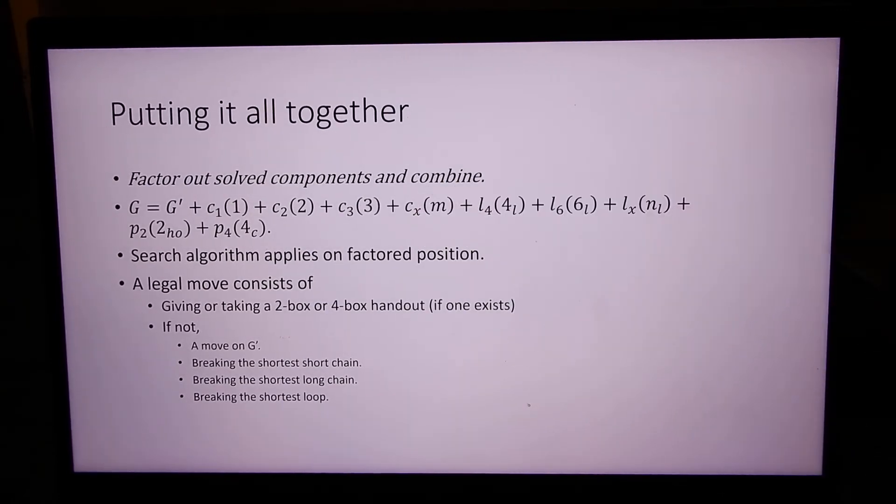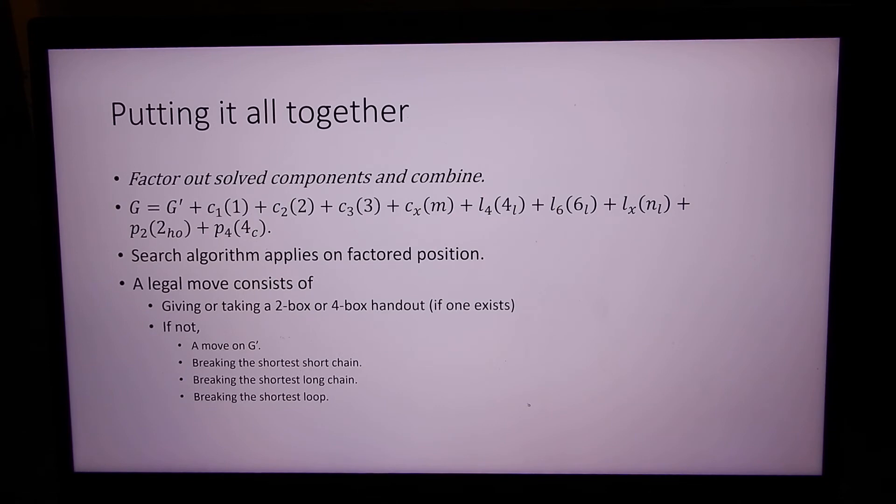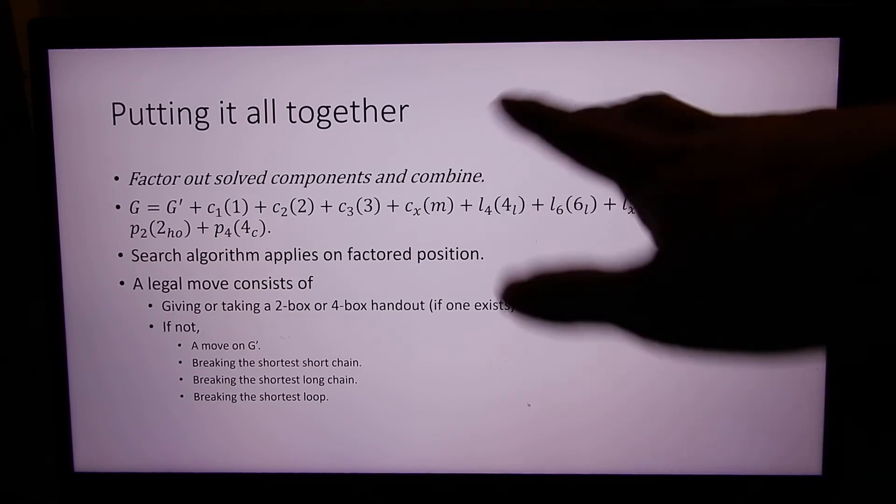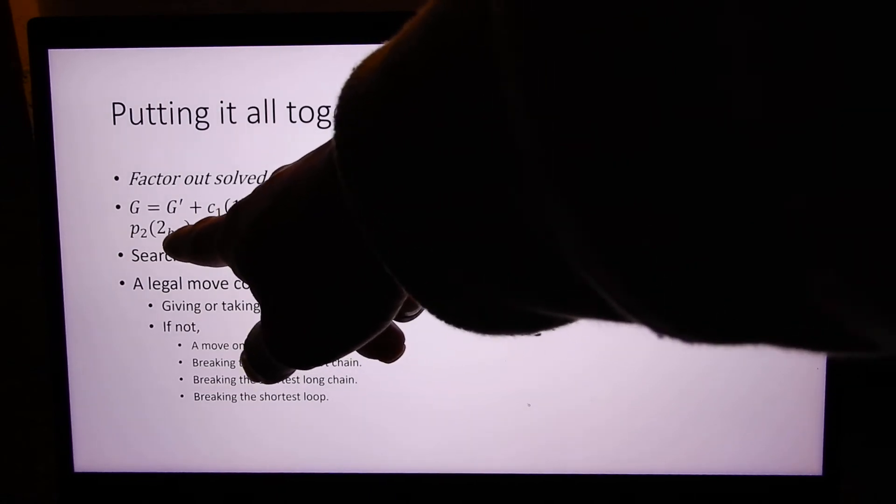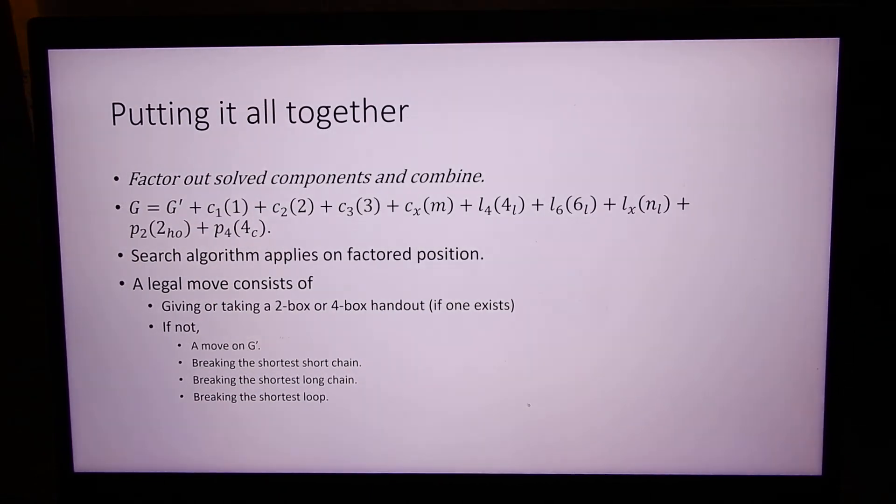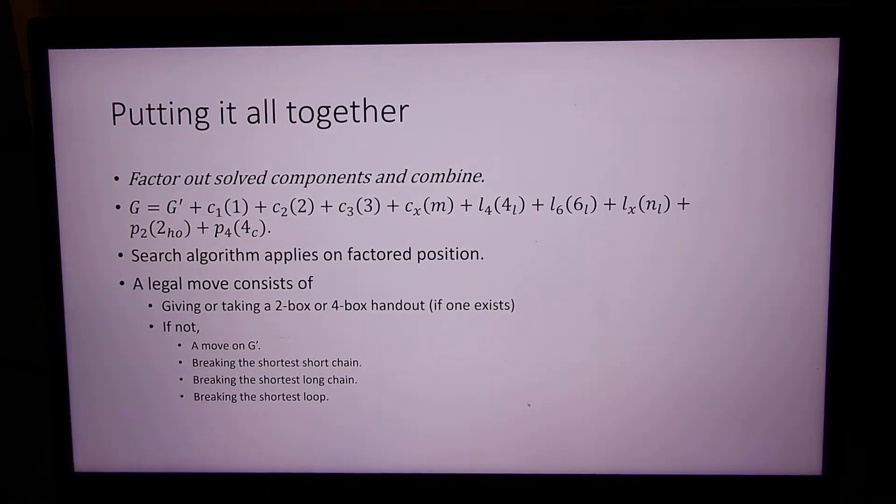We could only have at most one chain of four or more, because if we had more than one, they amalgamate. Similarly, for the loops, for the handouts, you could have a handout of four or a handout of two, depending on if you broke a chain or a loop.